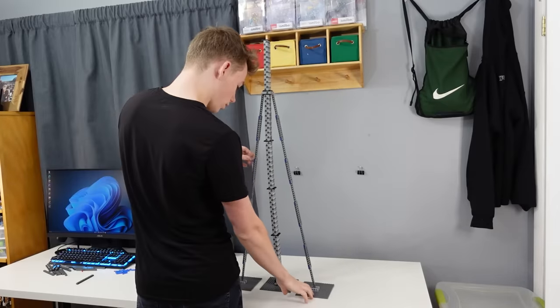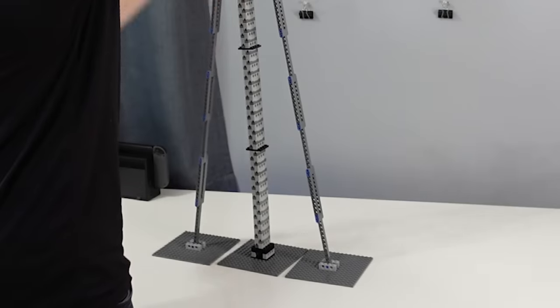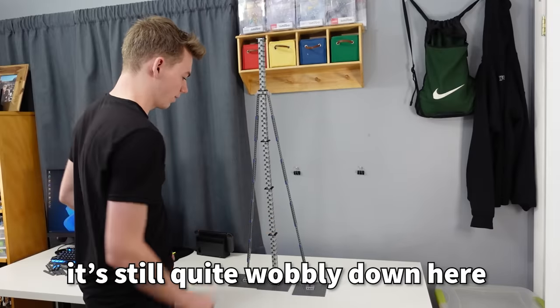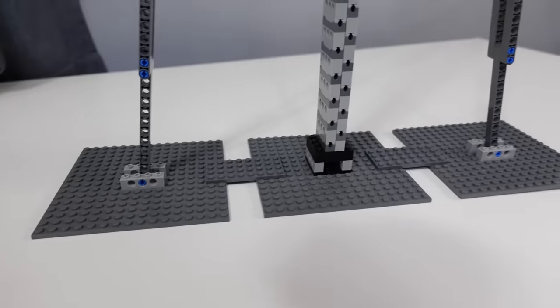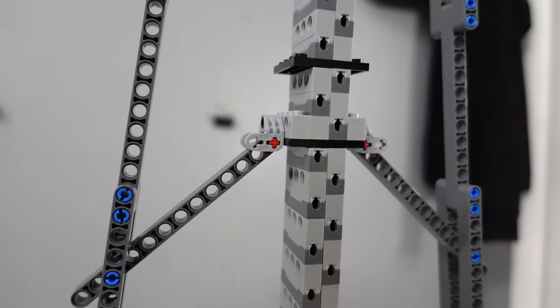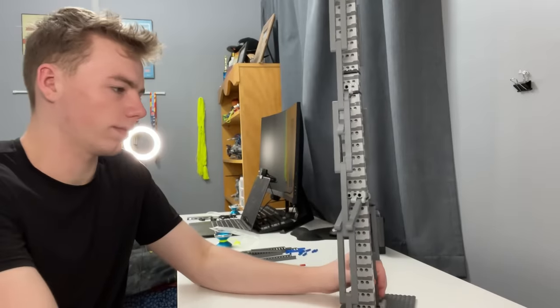However, the base plates attached to the support beams kept shifting around, not to mention it's still quite wobbly down here. So I connected the base plates together to keep them from shifting, and added not one, but two additional points of support to stabilize the middle of the tower.